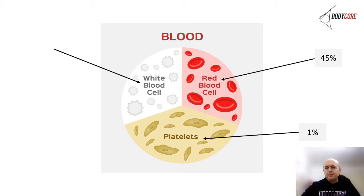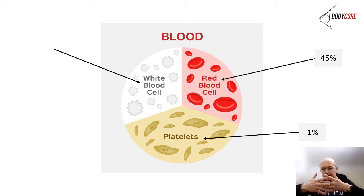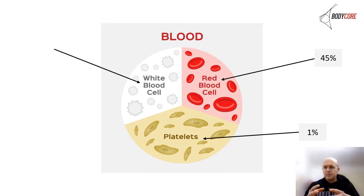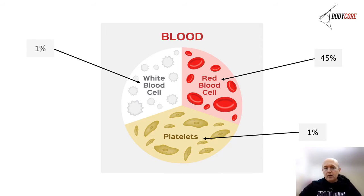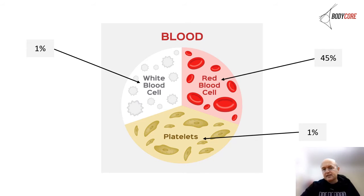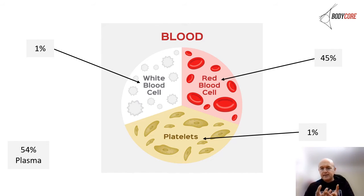45% of blood makeup is red blood cells. 1% is platelets, which are responsible for clotting and healing wounds — they form the scab when you graze your knee. About 1% is white blood cells, which fight infection and form part of the body's immune system, fighting disease. The other 54% — the biggest part — is plasma, which is the transport system that circulates blood around the body.